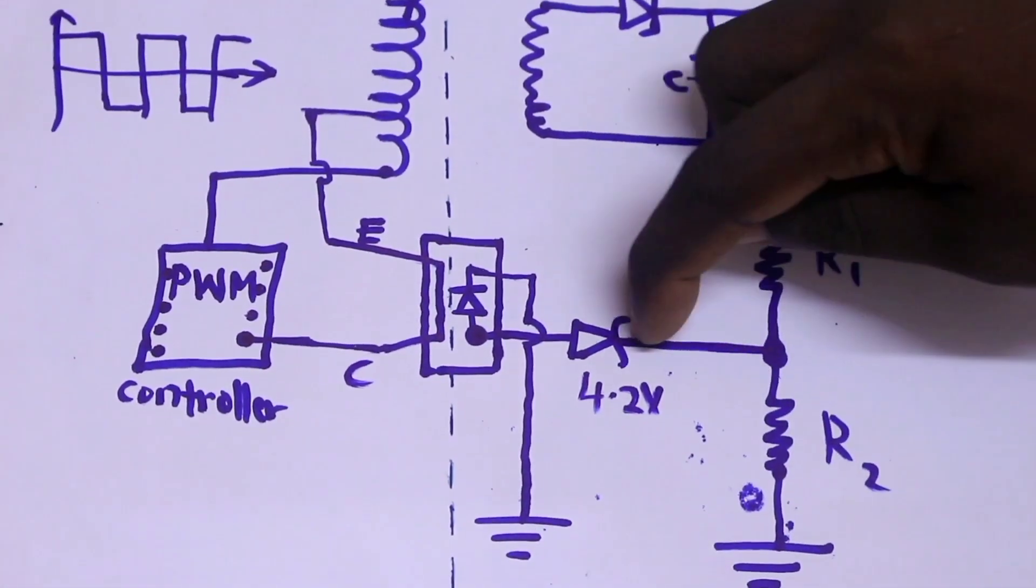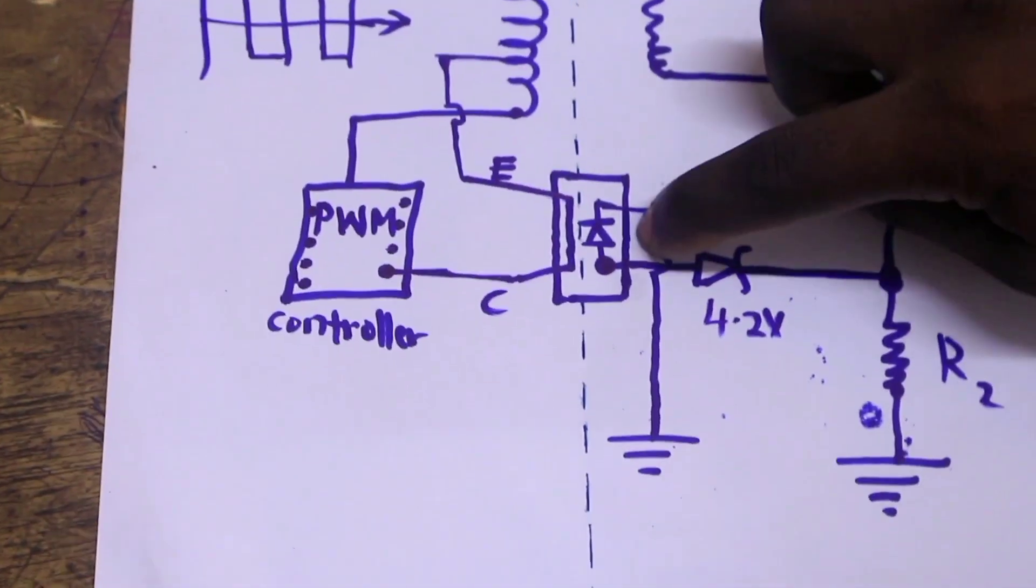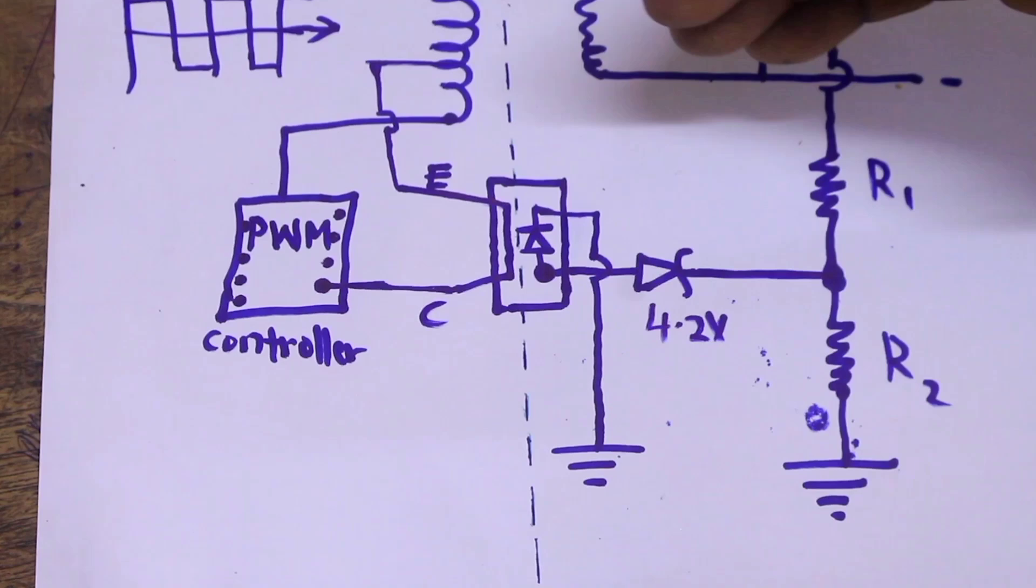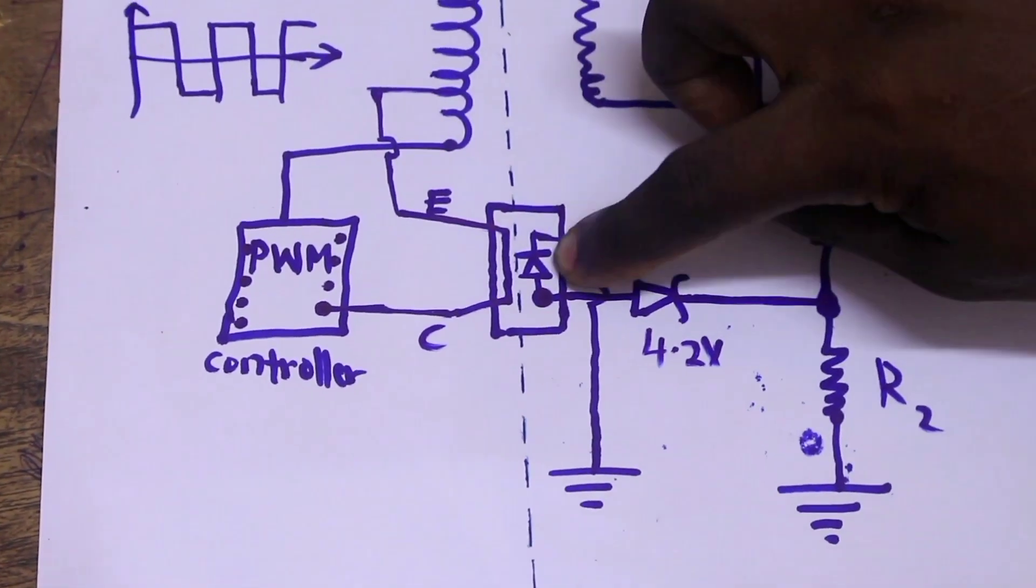When the voltage passes the zener diode, the diode will light. When the diode lights, this phototransistor will be closed. Think of the phototransistor as a switch, which closes when it senses light.